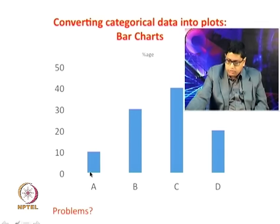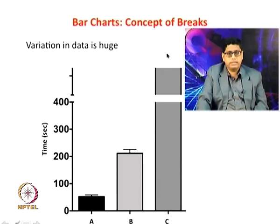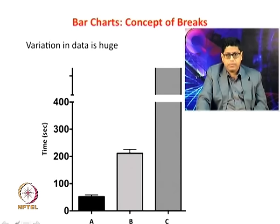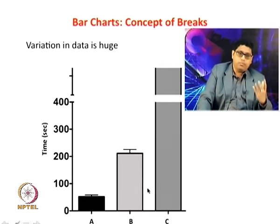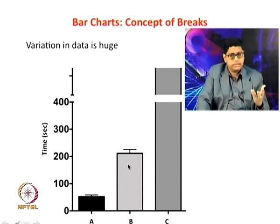There is a solution. When the variation in data is huge — for example you have three categories A, B, C where A is around 50 and C is maybe 600 — you can introduce something called a break. You can have a continuous axis up to the maximum of C, and then introduce a break. Let's say the value goes to 800: you can introduce a break at 400 and then plot again. This way everything fits and the essential information is captured — that one value is much smaller than another.